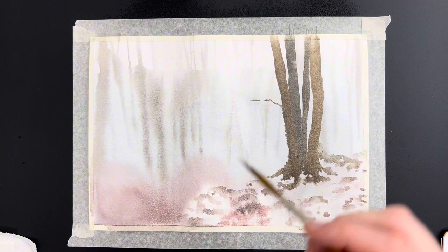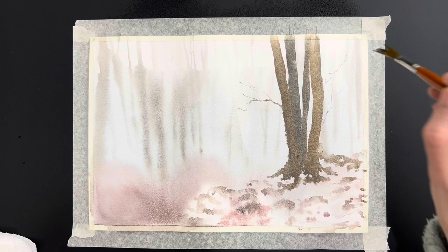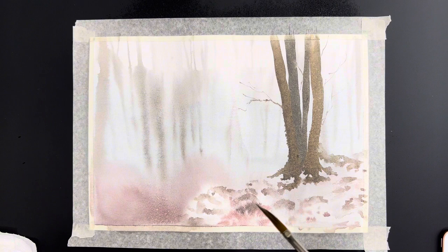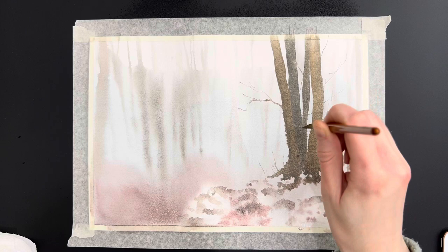Here I begin building in the branches of the trees which is going to add a lot of nice texture to the painting. Then I actually decided to switch over to this ProArt 9A sword brush which has a very interesting shape.